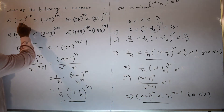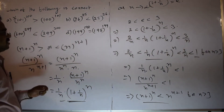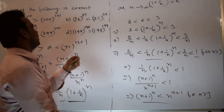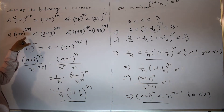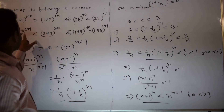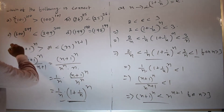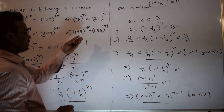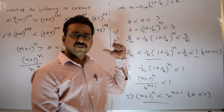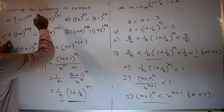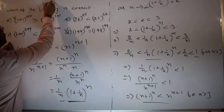Comparing with the available options: Option A says (N+1)^N is greater than N^(N+1) — that is incorrect. Option B: 26^25 < 25^26, which matches (N+1)^N < N^(N+1) — this is correct. Option C: 300^299 < 299^300, which also matches — this is also correct. Option D is incorrect. The possible correct options are B and C.